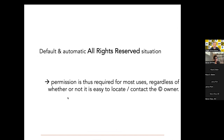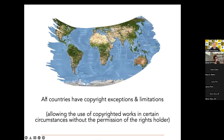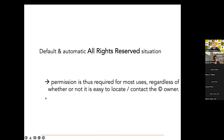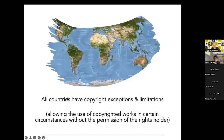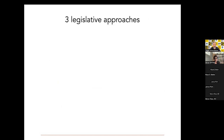Copyright presents us with a default and automatic 'all rights reserved' situation. That means permission is really required for most uses, regardless of whether the rights holder is easy to locate or contact. How do we make sure we are speaking to the other side of the balance? This is where copyright exceptions and limitations mainly come in. It's not something obscure — as far as I know, all countries in the world have copyright exceptions. It's not so much a question of whether we should have exceptions and limitations, but how we deal with them really.